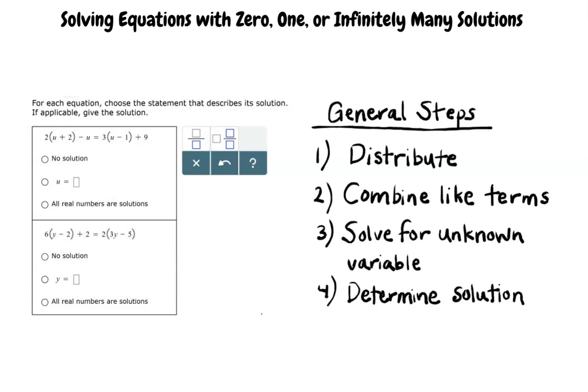The general method to work through these problems is first to distribute, then combine like terms, next solve for the unknown variable, and last determine the solution.